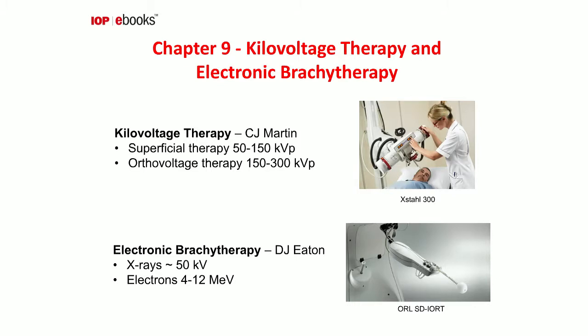Chapter 9 has two sections. The first describes kilovoltage therapy using x-rays in the range 150 to 300 kVp, and superficial therapy using x-rays in the range 50 to 150 kVp. Worked examples and physical data for shielding calculations are included. The second section outlines equipment that has become available in recent years for electronic brachytherapy — brachytherapy not with a sealed source but with an electronically generated source, either 50 kV x-rays or electrons in the range 4 to 12 MeV. These therapies are not necessarily confined to the radiotherapy department, and whilst the radiation protection measures are not extensive, they need to be carefully thought about.